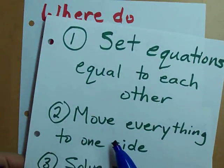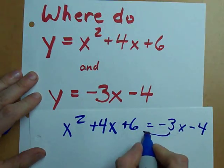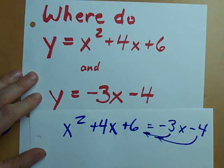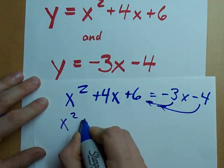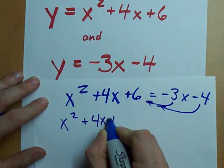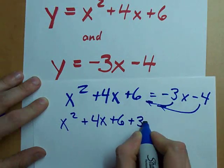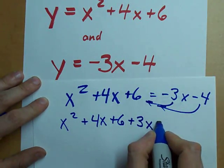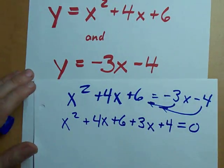Two, move everything to one side. Let's move the negative 3 over and we'll move the negative 4 over. What do we get? x squared plus 4x plus 6. When negative 3x comes over, it becomes plus 3x. When minus 4 moves over, it becomes plus 4. We're left with zero on that side.